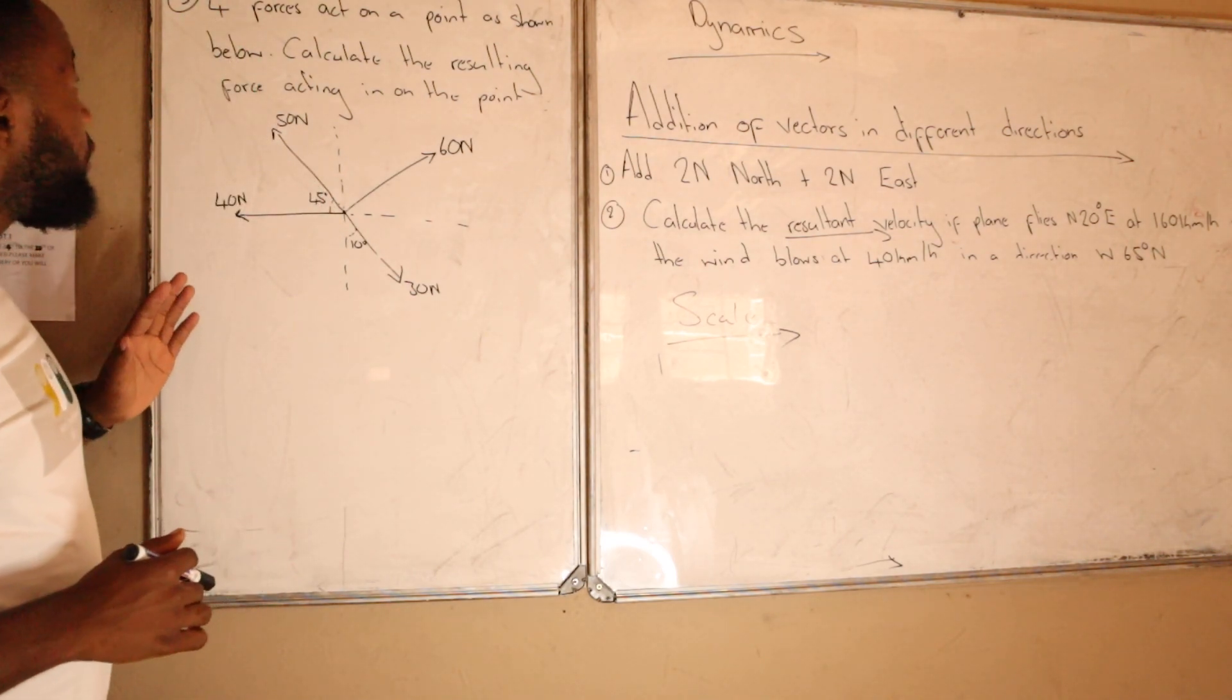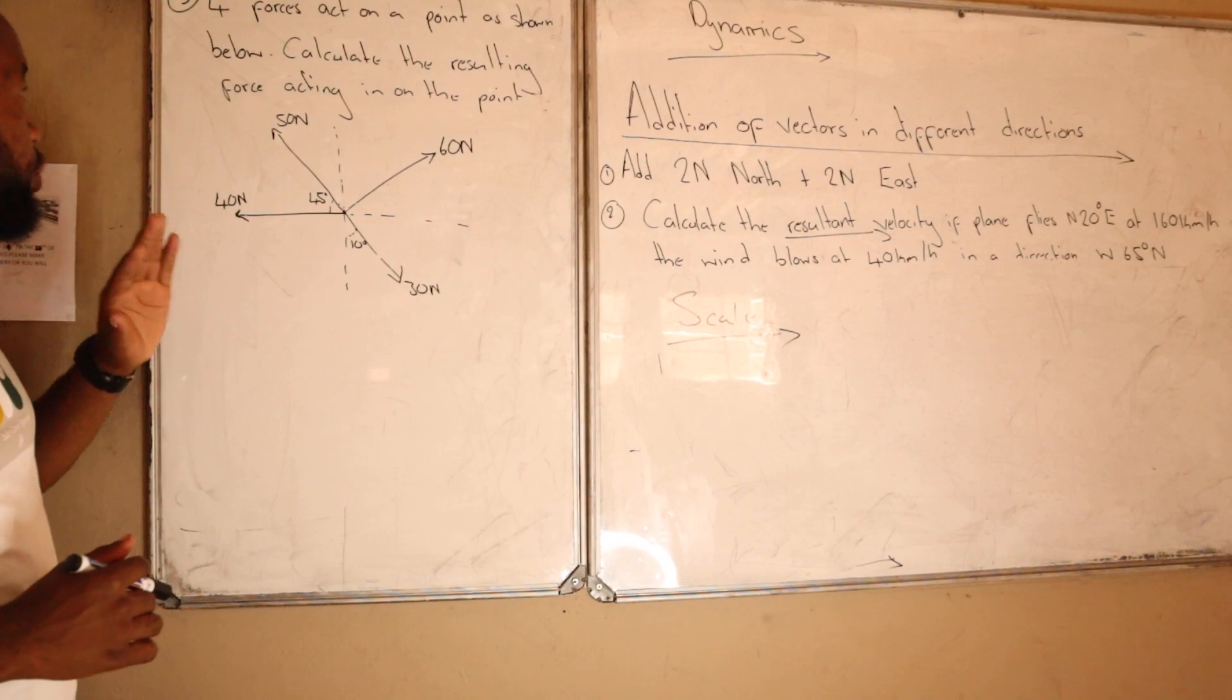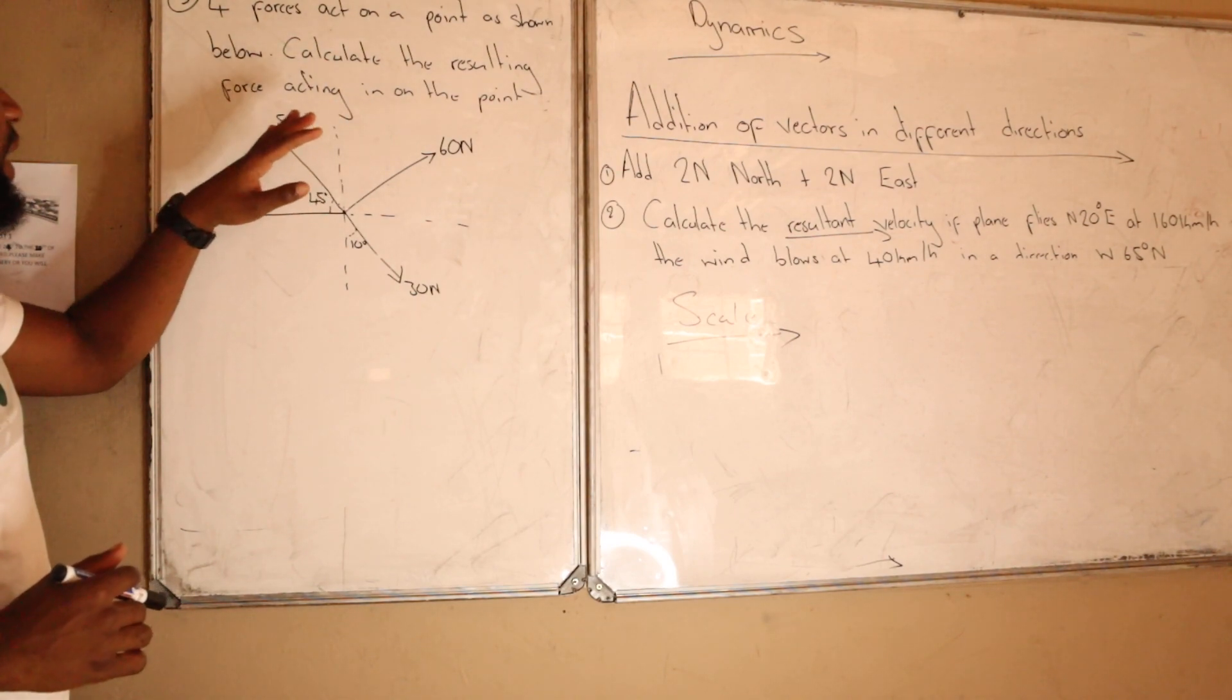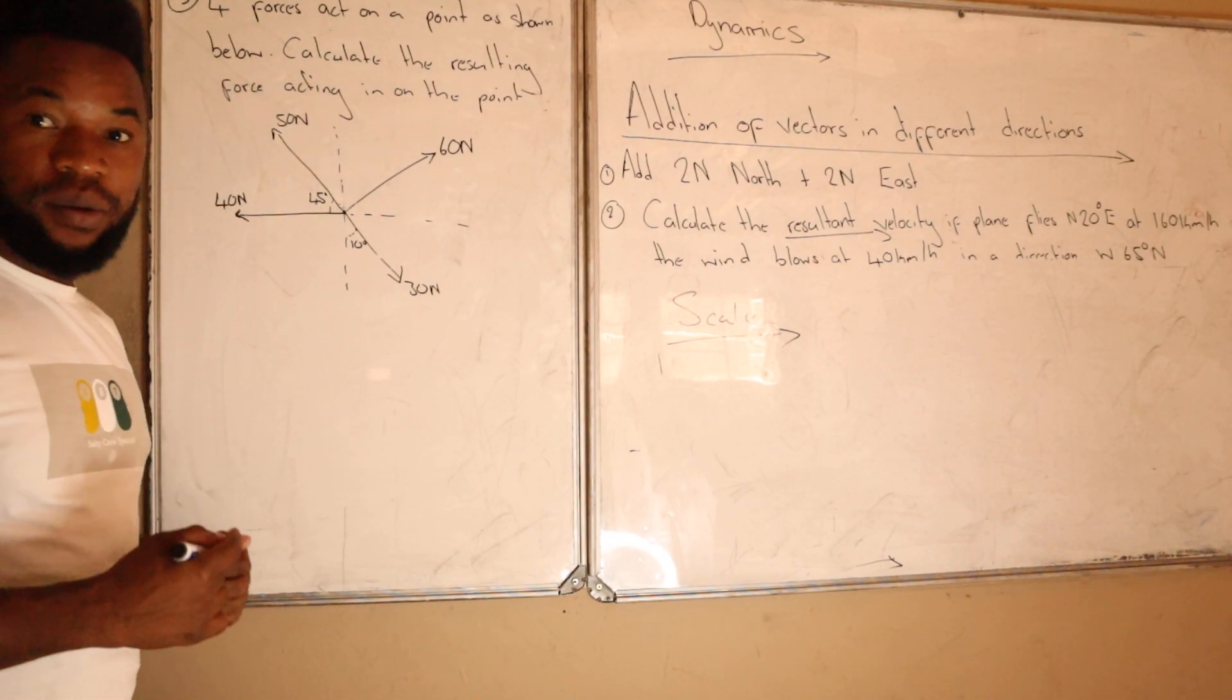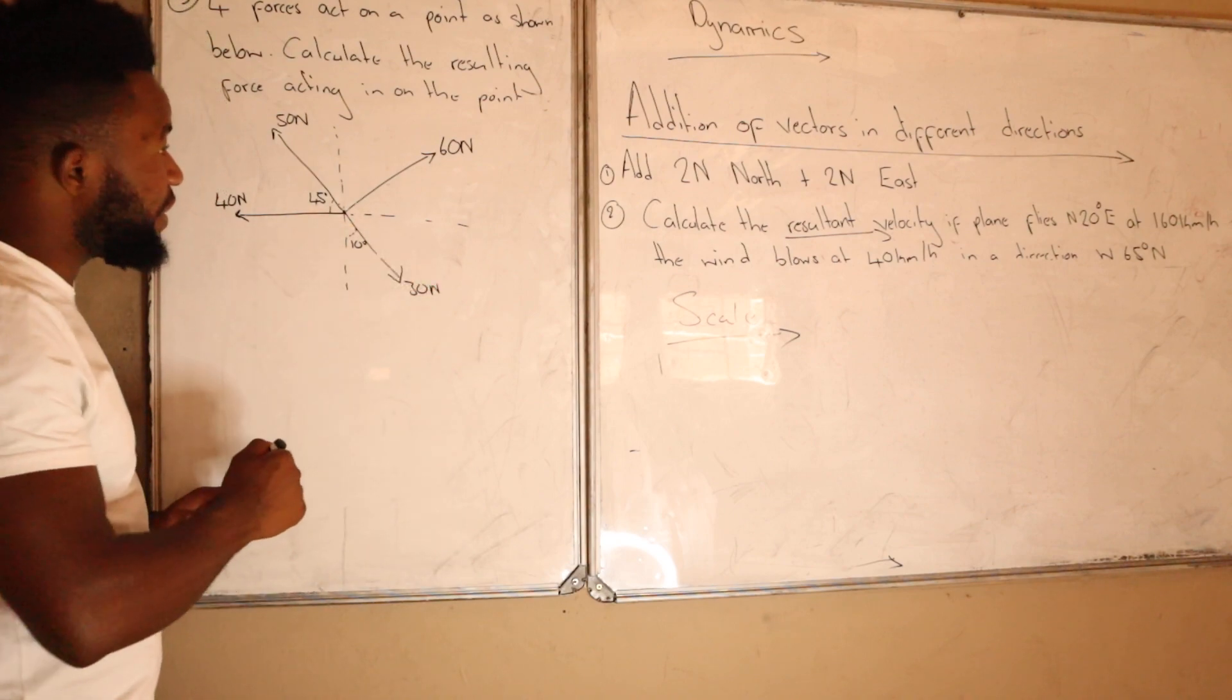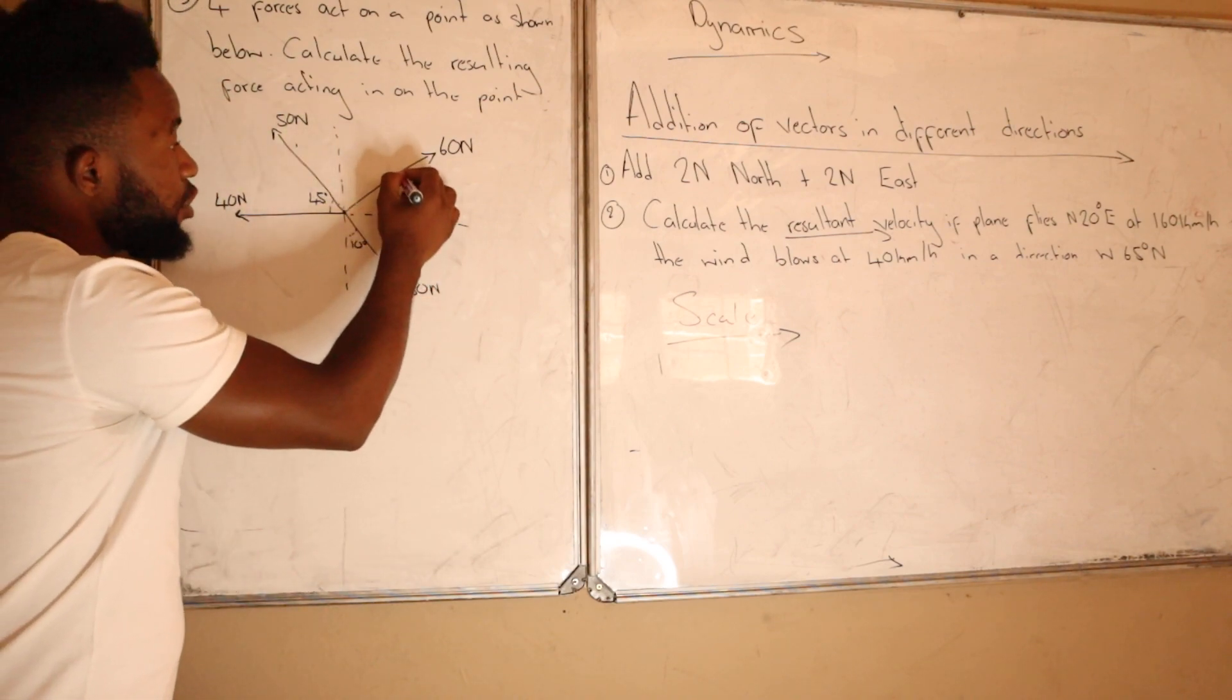You can see clearly, I said four forces act on a point as shown below - calculate the resultant force acting on the point. So as I was explaining, whenever you are given four forces, I'm given one, two, three, and four.